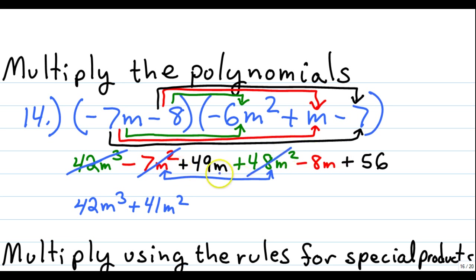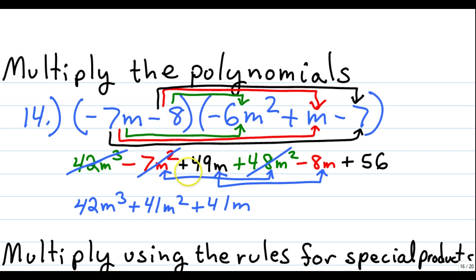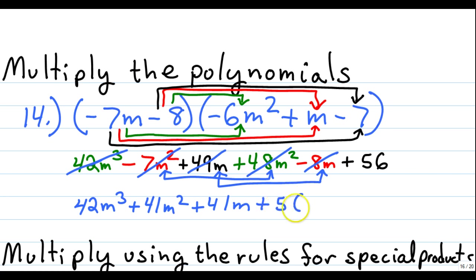Next, we have positive 49m and negative 8m. Again they're opposites, so we subtract: 49 minus 8 gives us positive 41m. We cross those out. All that's left is 56, which has a degree of zero — nothing left to add it to, so we carry it down as plus 56. Our final answer is 42m cubed plus 41m squared plus 41m plus 56.